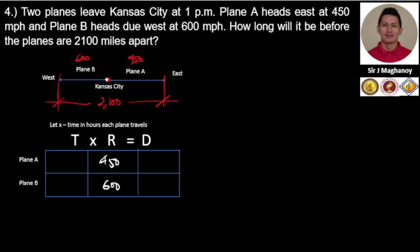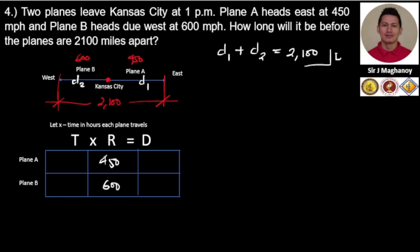The distance of Plane B is D2 and the distance of Plane A is D1. The total distance traveled by our planes is equal to the distance of Plane A plus the distance of Plane B, which equals 2100 miles. This will be our starting point to formulate our equation.